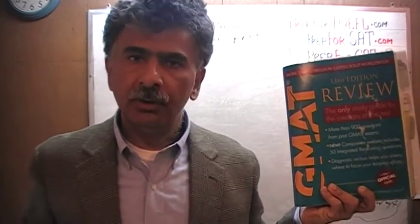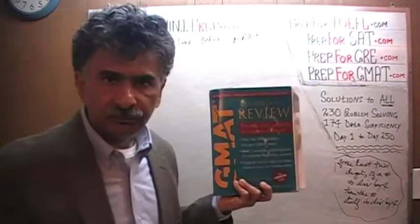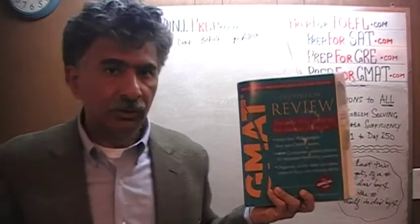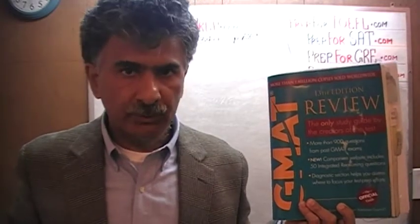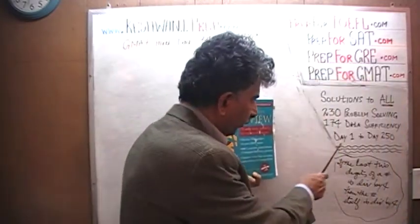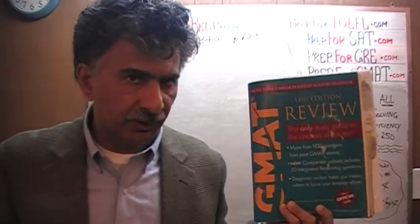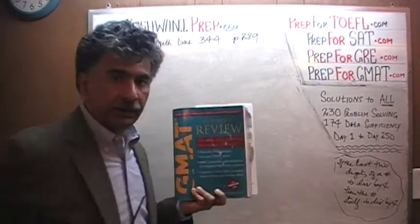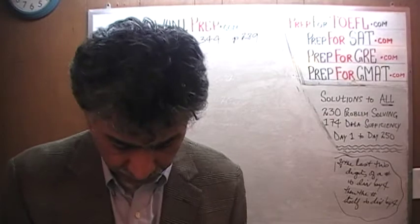You're going to need it. The book contains 230 problem-solving questions and 174 data sufficiency questions. We have already solved every single math problem from this book. If you're interested in watching the original solutions, you'll find them from day number 1 through 250. Right now we are in the process of redoing the problems, and we are on page number 289. Please turn to it.